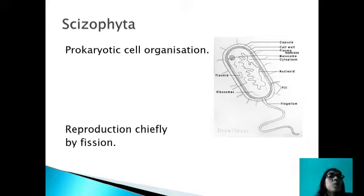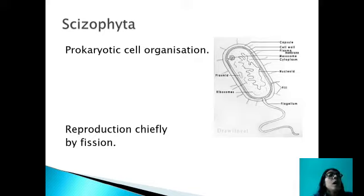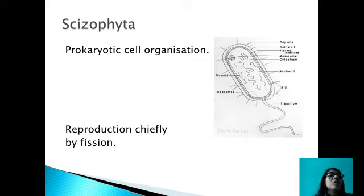In prokaryotic cells, double membrane-bound cell organelles are also absent. Mitochondria, the powerhouse of the cell, is also absent in prokaryotic cells. Hence the function of mitochondria is carried out by a special structure known as the mesosome, which is analogous to mitochondria. Analogous means a structure which is similar in function but different in origin. The mesosome functions like mitochondria but its origin is different, as it is not a distinct cell organelle — it is just an in-folding of membrane. All members present in Schizophyta reproduce chiefly by fission, meaning a parent cell divides into two daughter cells.